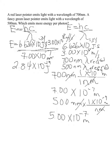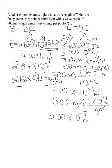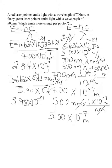Now we do the exact same thing for the green: 6.626 times 10 to the negative 34, times 3.00 times 10 to the 8th meters per second, divided by 5.00 times 10 to the negative 7. Typing this into the calculator gives an energy of 3.98 times 10 to the negative 19. Again, meters cancel and seconds cancel, leaving us with units of joules.